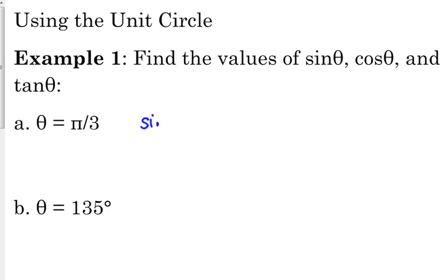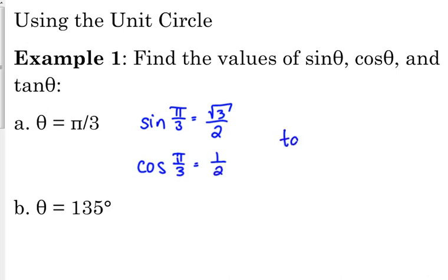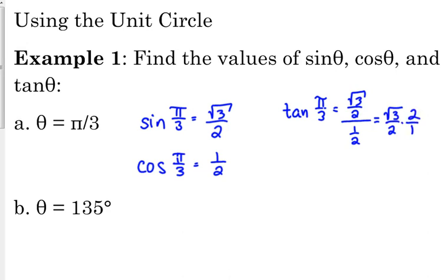Sine of π/3 is √3/2. Cosine of π/3 is 1/2. And the tangent of π/3 — we put sine over cosine — so that's (√3/2) ÷ (1/2). Keep the top the same, flip the bottom over and multiply: √3/2 × 2/1. So the tangent of π/3 equals √3.